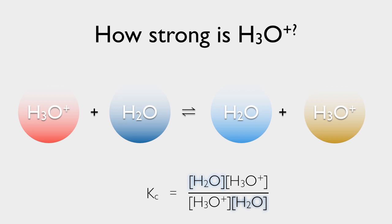And here's where many chemists differ in opinion. Some chemists would look at the equilibrium expression and say everything cancels out, and that hydronium ion, by definition, has a Kc of 1.